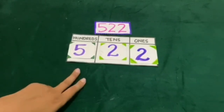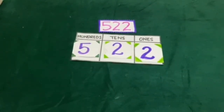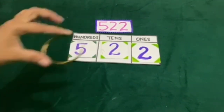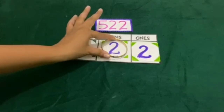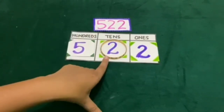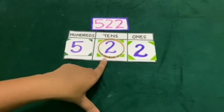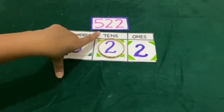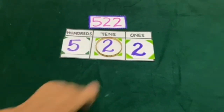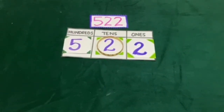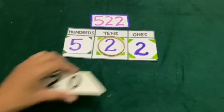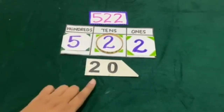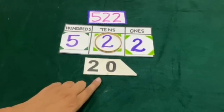Now we will learn about the place value. We will find the place value of the encircled digit. Here it is 2 which is at 10's place. So the place value of 2 at 10's place is 20, which means 2 tens is equal to 20.